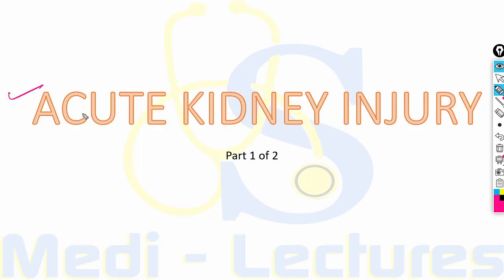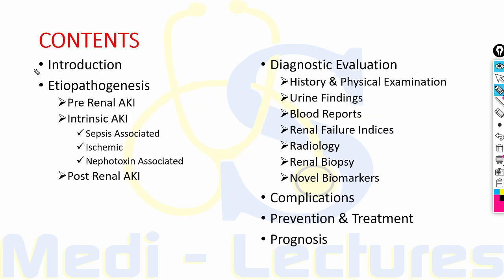Today we will discuss the topic of acute kidney injury in two parts. This is part one, which will cover the introduction and etiopathogenesis of pre-renal AKI, intrinsic AKI, and post-renal AKI.